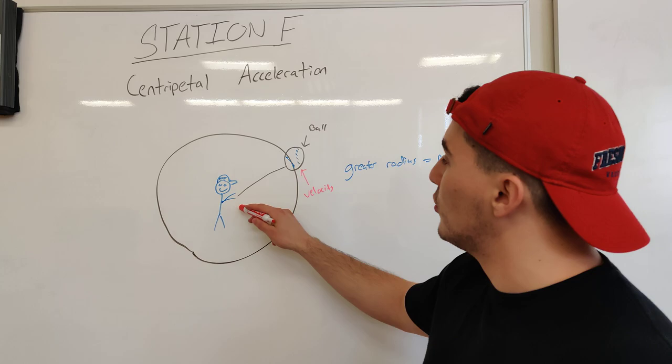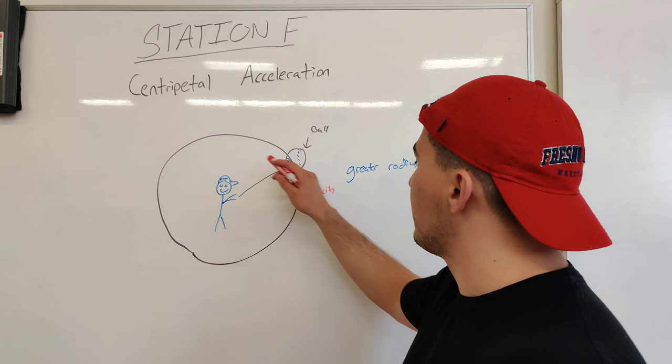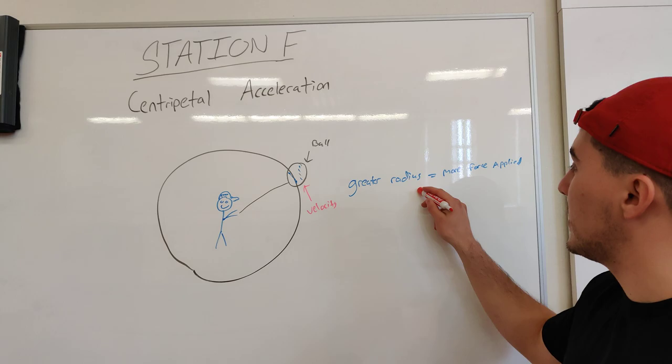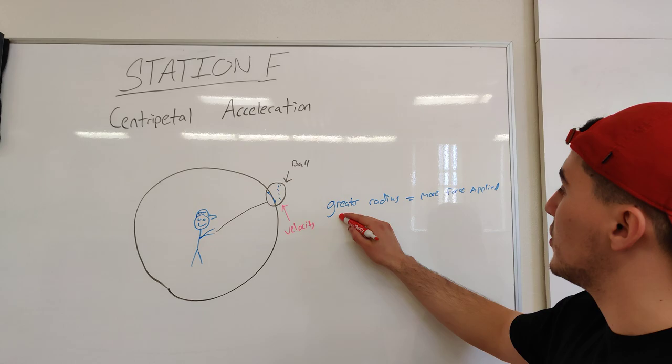So for example, we have a guy here holding a string that is connected to a baseball. He's rotating here, spinning angularly, and we know that Centripetal Acceleration is proportional to the radius of the distance to the object that we're holding.